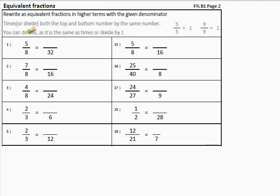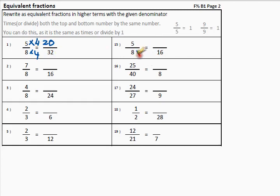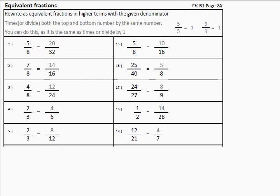We are going to follow that method to change these fractions into ones with these new denominators. The bottom number is the denominator. So let's see — eight times what gives us thirty-two? Eight times four. So five times four gives us twenty. Eight times what gives us sixteen? Eight times two. So we times by two at the top as well — five times two is ten. Okay, your turn. Pause the video and do the rest. Now, there you go, there's your answers.